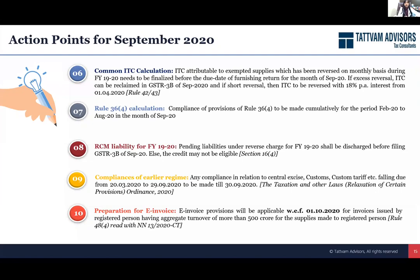If you have any compliance, appeal, or show cause notice for any previous law — pre-GST regime, excise, customs, etc. — and the due dates for these were from 20th March to 29th September, then 30th September is the deadline. Please quickly go back and see if you are still having pending matters. 30th September is the last extended deadline by which you can file those appeals. Otherwise, you face the rigors of non-compliance.